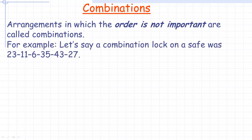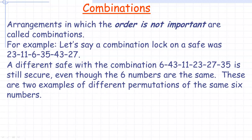Let's say we had a combination lock and a safe. This word isn't really the greatest to use for this, but they are normally called combination locks. This word has very little to do with what a combination is. Let's say the lock was 23116354327. A different safe with combination 64311232735 — notice it's the same six numbers, but we've changed the order. So this would actually be a different safe combination, but in mathematics these are actually the same combination, because a combination is just a group. If you change the order, it's still the same group of things.